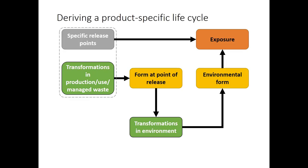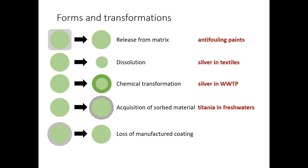It's also worth noting that regulatory regimes differing from country to country may influence the life cycle. For example, in the UK sewage sludge can be spread on agricultural land, but in the Netherlands it has to be incinerated. This has clear implications for how nanomaterials may cycle if they are present in sewage sludge in those different countries.